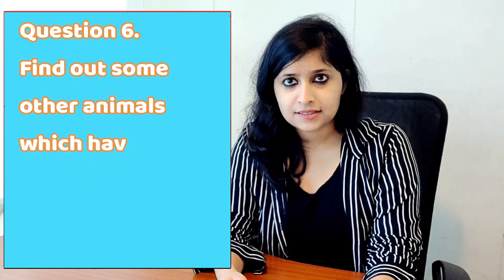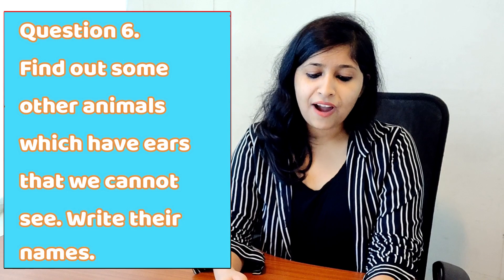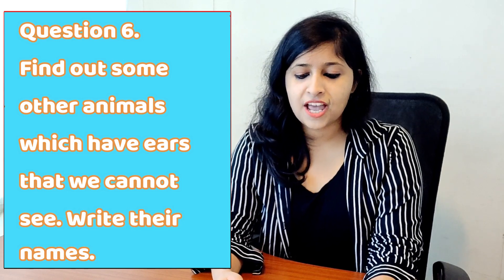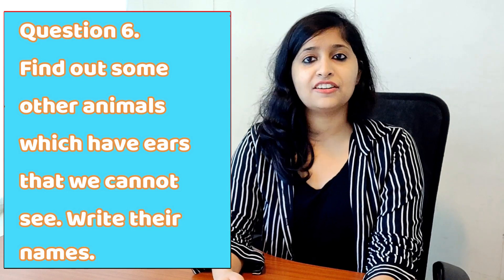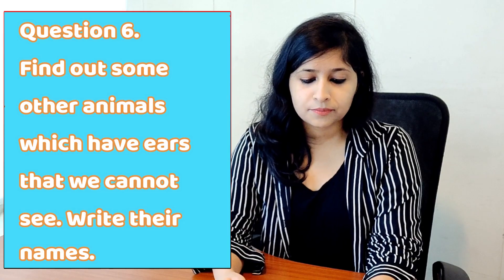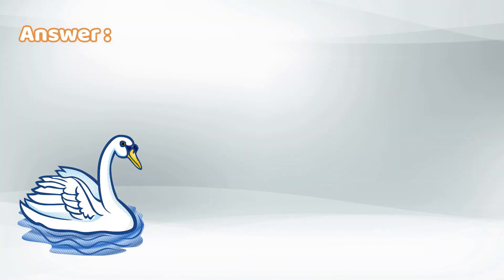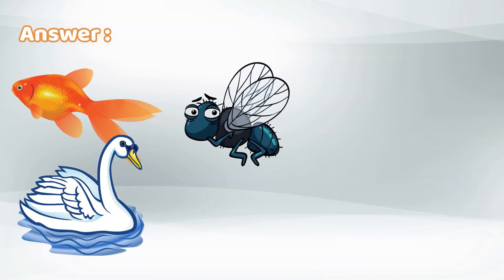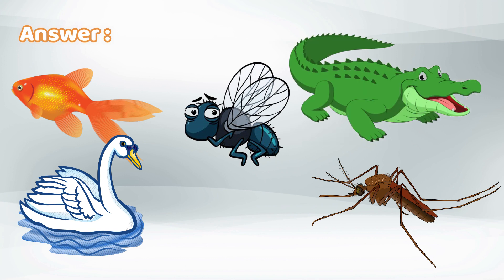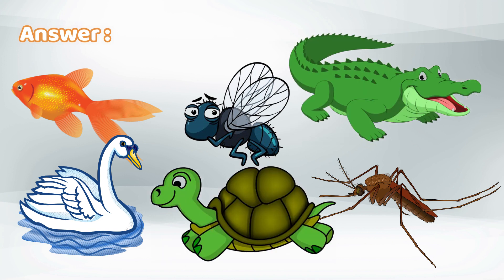Question number six: find out some other animals which have ears that we cannot see. Write their names. Answer: swan, fish, fly, mosquito, crocodile, tortoise, etc.